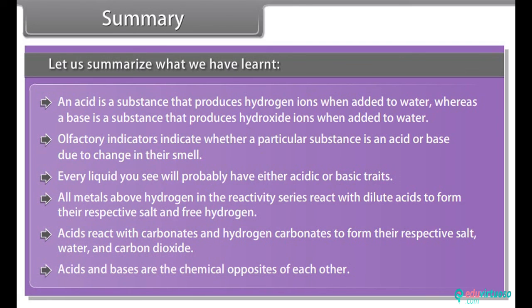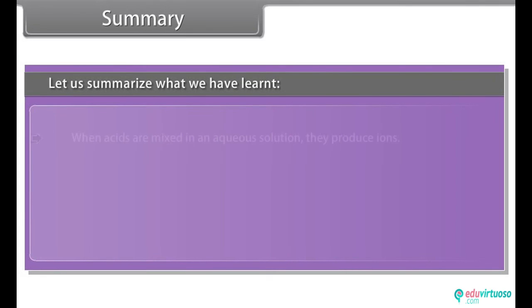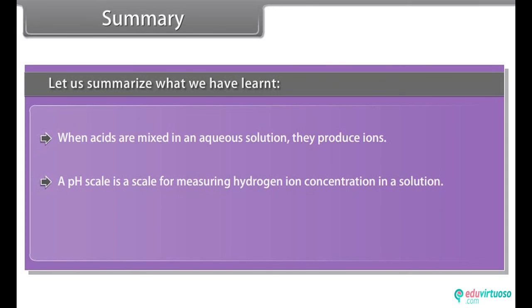Acids and bases are the chemical opposites of each other. When acids are mixed in an aqueous solution, they produce ions. A pH scale is a scale for measuring hydrogen ion concentration in a solution. Salts are formed from the reaction between acids and bases.